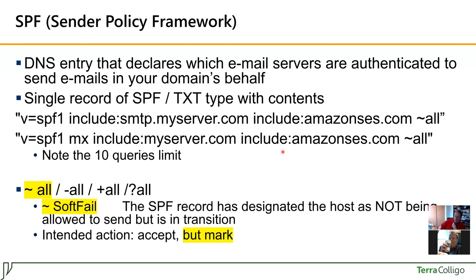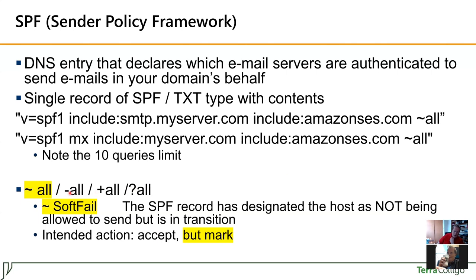The last part of the record is the 'tilde all'. This means what happens with all other servers who are sending emails on your behalf. The options are: tilde all (~all), minus all (-all), plus all (+all), and question mark all (?all). Tilde all means the email is accepted but marked as potential spam if some other server sends on your behalf. Minus all means no other servers can send emails on your behalf. Plus all means every server on the internet can pretend to be your official sender. Question mark all means you don't care. Minus all is too strict, plus all is too broad, and tilde all is the recommendation.